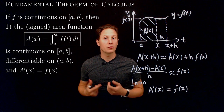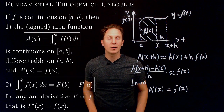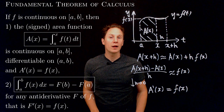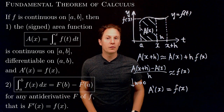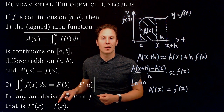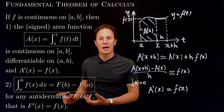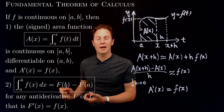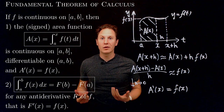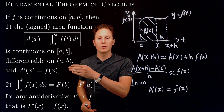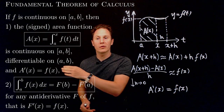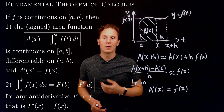Now the fundamental theorem of calculus also has a second part, which says we can evaluate the definite integral from A to B of f of x dx as the difference of endpoint values with any antiderivative of little f. So capital F is an antiderivative of little f, meaning capital F prime of x is little f of x, and the definite integral between A and B can be evaluated as capital F of B minus capital F of A. According to Part 1, we already know that the signed area function is an antiderivative of little f, because A prime of x is little f of x.